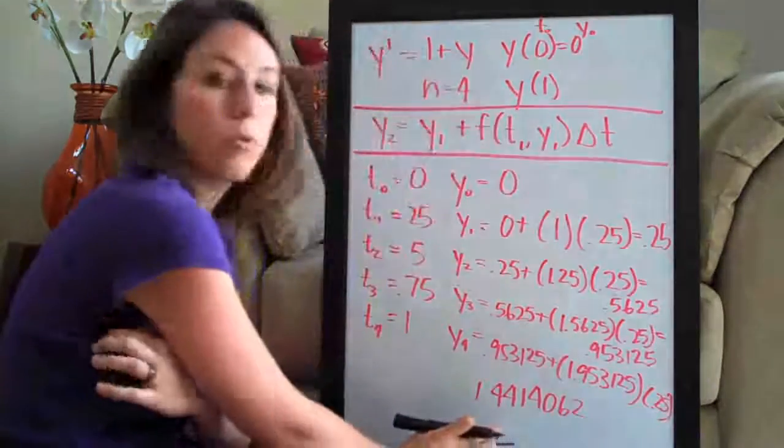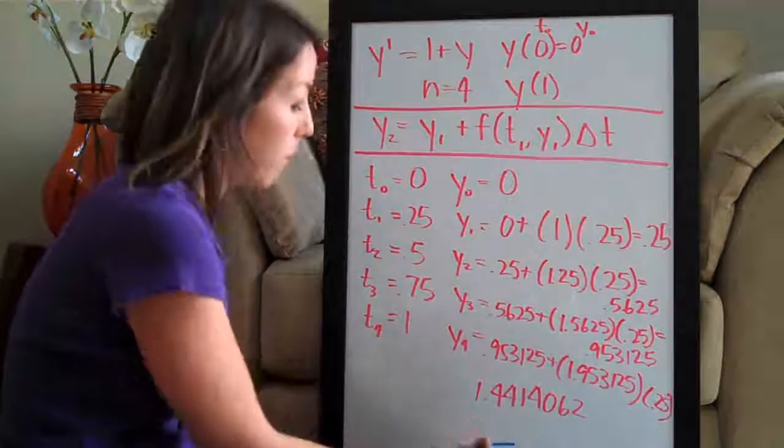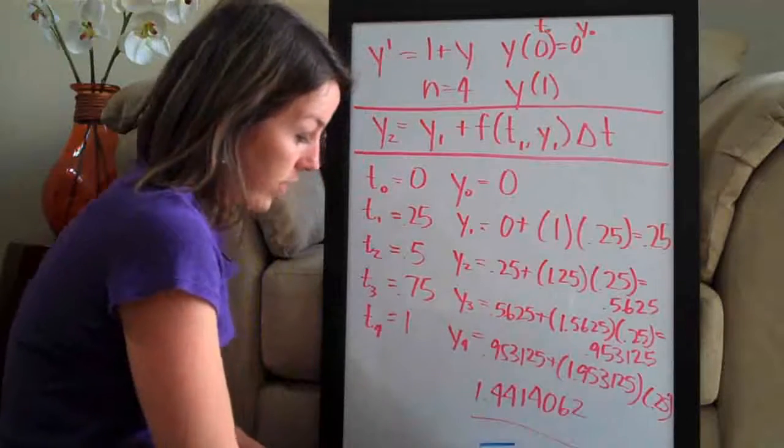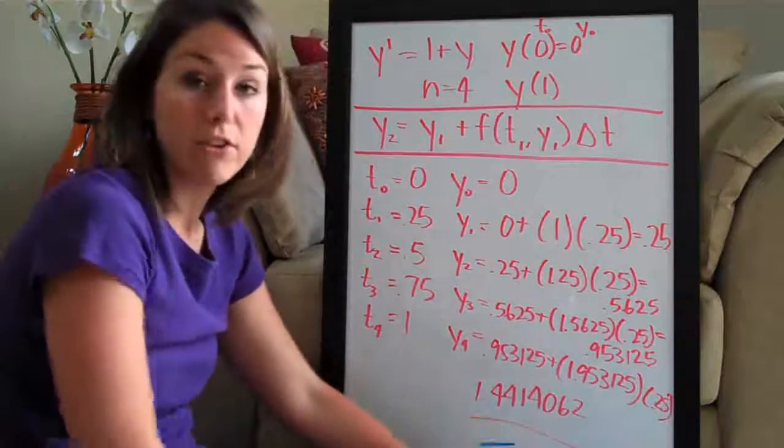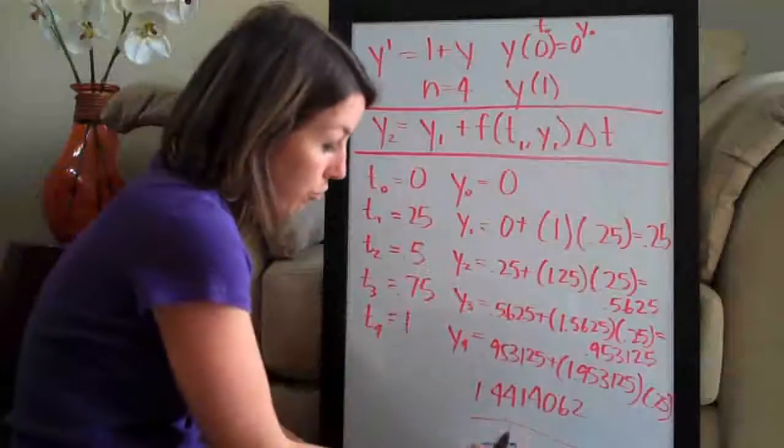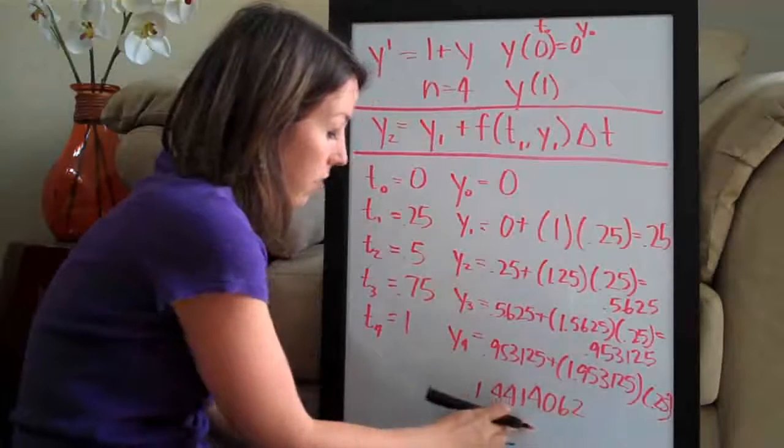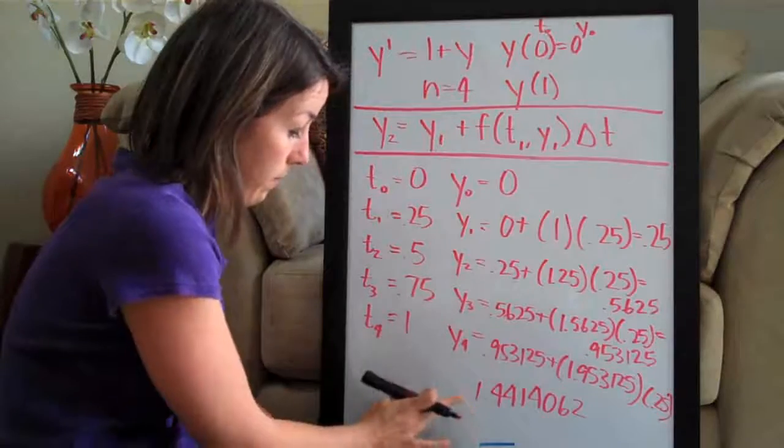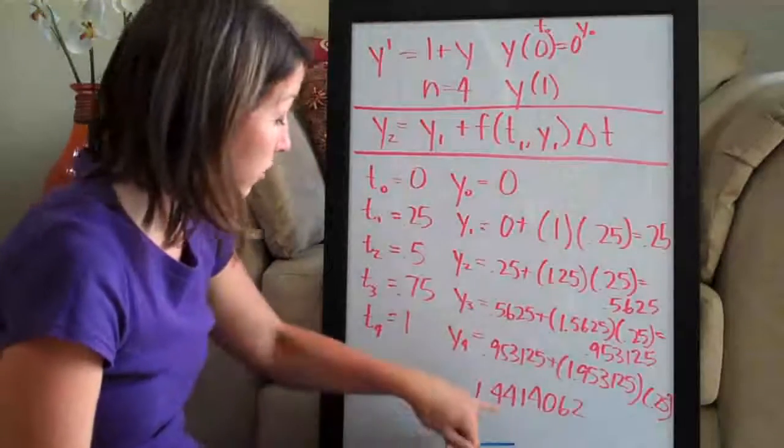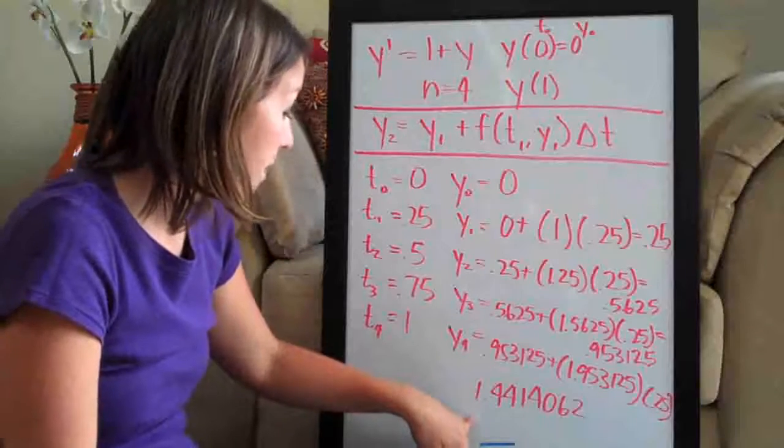Now again, if this were a multiple choice test and you see that one of your answer choices is 1.44, you know that that's correct. If you're having to show your work and you need to write out your answer, it's not multiple choice, go ahead and write every decimal place just to be safe so that the professor knows that you did the problem correctly. So that is our final answer for our Euler's method approximation.